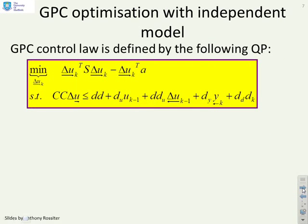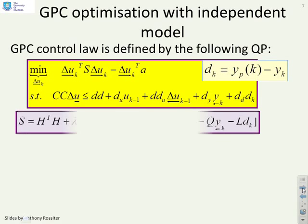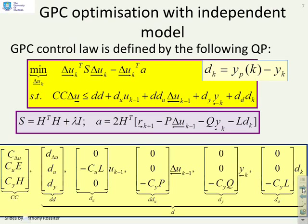So the GPC control law with an independent model prediction is defined like this. So there are your equations. And the key thing is, how do I define this parameter A? And there it is. And you'll notice it has the offset term and it has the model past data there. And how do I define these particular constraint matrices, du, ddu, dy, dd and so on. And that's all given down here. And if you need to pause the video and look at that more slowly, then you can do so now.